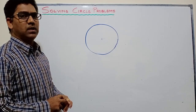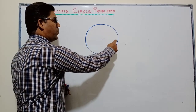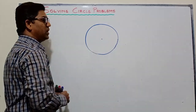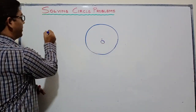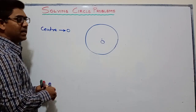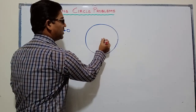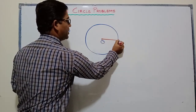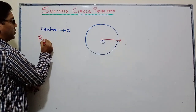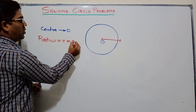In this session we will be solving circle problems. A circle is a set of all points which are equidistant from a fixed point. The fixed point is known as the center of the circle, and the fixed distance is known as radius. So radius is the distance from the center to any point of the circle. This segment OA is known as the radius of the circle, and we denote it by small r, which is OA in the diagram.